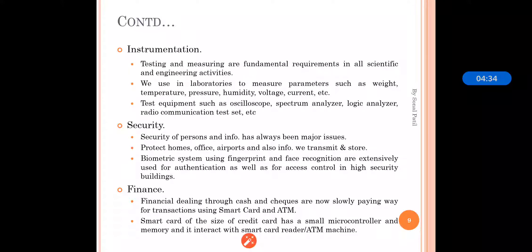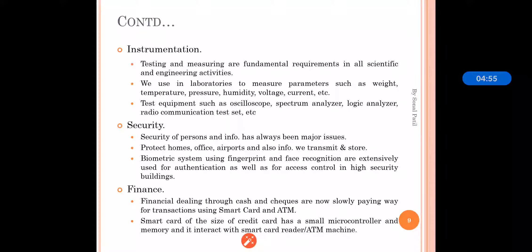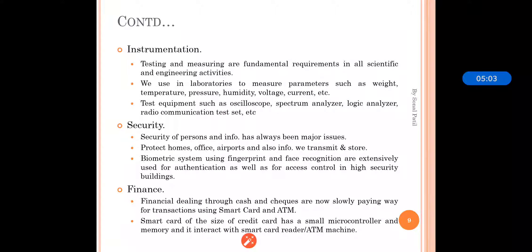Next is instrumentation, which is part of both industry and daily life. Testing and measuring are fundamental requirements in all scientific and engineering activities. We can use systems in laboratories to measure parameters such as weight, temperature, pressure, humidity, voltage, and current. These parameters are measured using equipment such as oscilloscopes, spectrum analyzers, logic analyzers, test sets, and test soil kits.